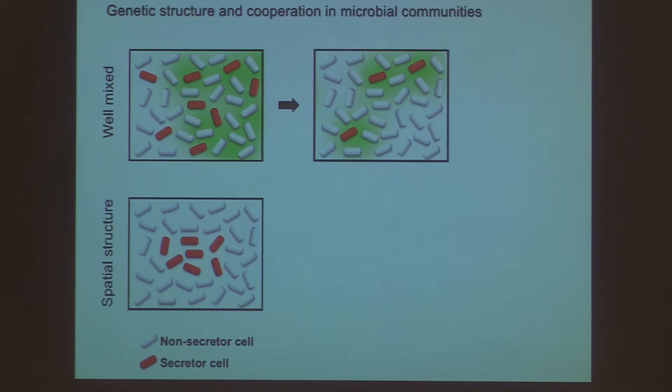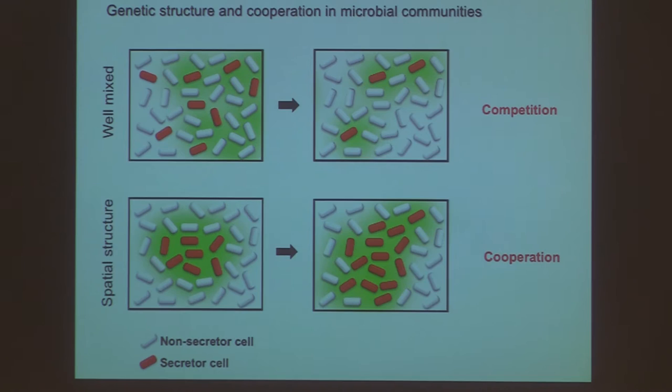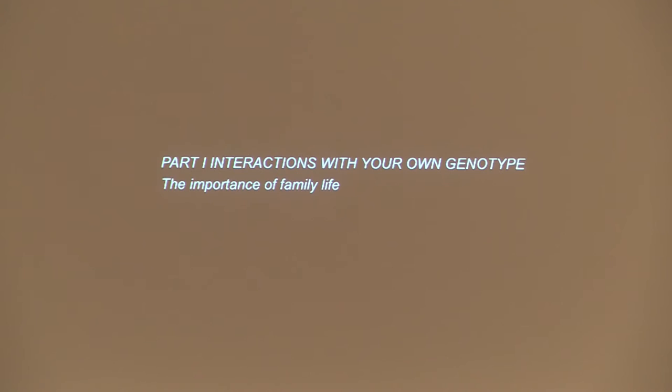One way to make individuals want to cooperate is a simple manipulation: just put the red cells in a little cluster. Now the red cells preferentially help their own genotype, and under these circumstances they actually do better. This is literally like non-family versus family interactions, but at the level of a clone — two different genotypes. All else being equal, we might expect well-mixed conditions to favor competitive genotypes, and clustered conditions to favor cooperative ones.